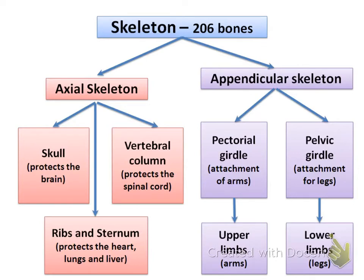The appendicular skeleton is made up of the pectoral girdle, which supports the bones of the upper limb, and the pelvic girdle, which is basically the base for holding up the torso, and then the bones of the lower limbs.